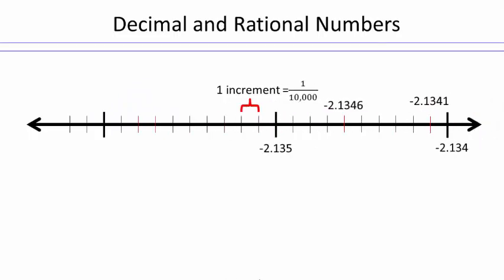So that means we can plot our decimal and rational numbers on number line now. So if I say that the increment is 1 over 10,000, and I end up with this tick mark to be negative 2.135, then 10,000 later, which is right there, will be negative 2.134. Why is that? Because this is 10th, 100th, 1,000th. So if this is 1,000th, then the next little tick mark is going to be 1,000th.